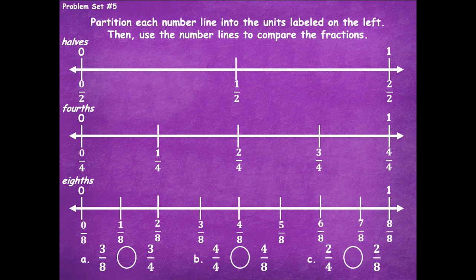Now we'll compare. For three eighths versus three fourths, put one finger on three eighths and one on three fourths — which is a greater distance from zero? Three fourths is farther, so three eighths is less than three fourths.